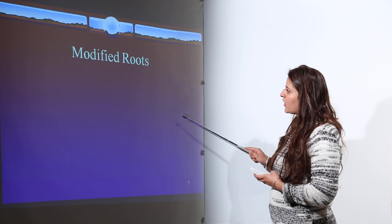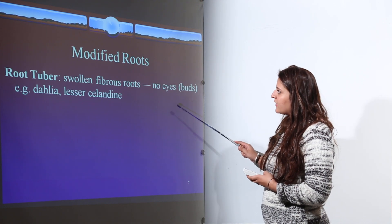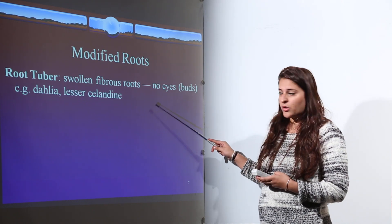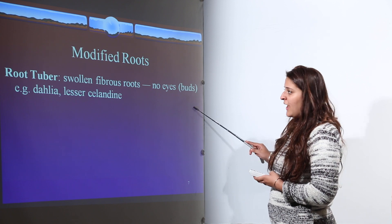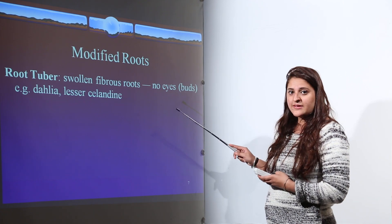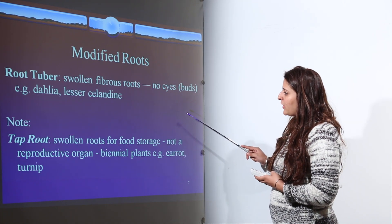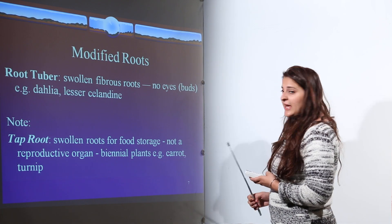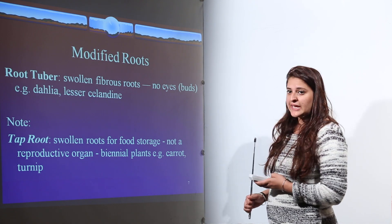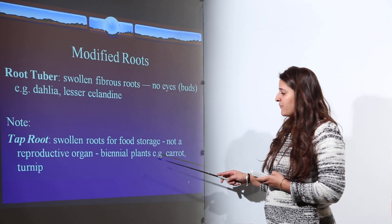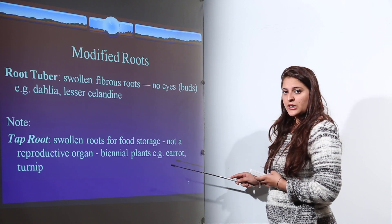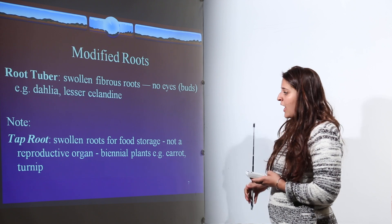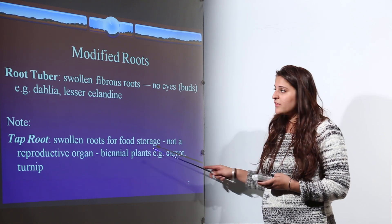The next modification is modified roots, which occur in root tubers, where swollen fibrous roots convert into a complete shoot system and a complete plant. Examples are dahlia and lesser celandine. In tap roots, the swollen roots are meant for storage of food and are not reproductive organs — examples include biennial plants such as carrot and turnip.